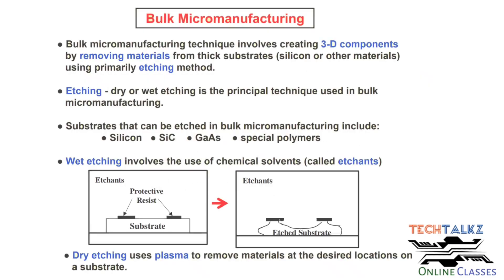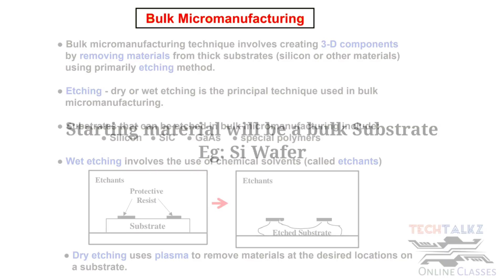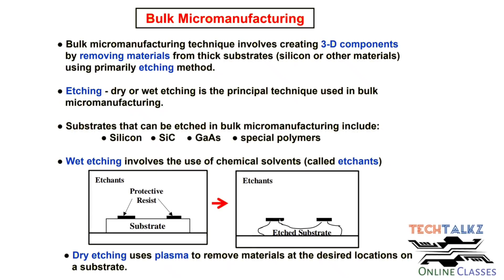The first process is Bulk Micro Manufacturing. To remove unwanted portions, we need to use different types of Etching Processes. Basically, there are two types of Etching Processes: the first one is Wet Etching Process, and the second one is Dry Etching or Plasma Etching.